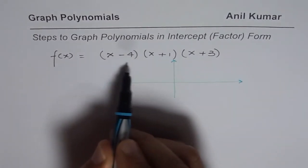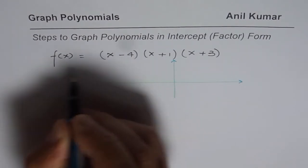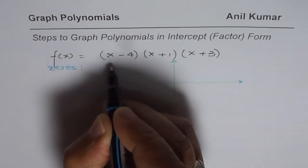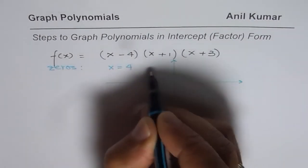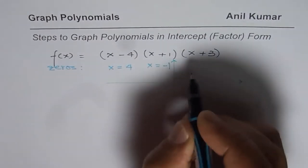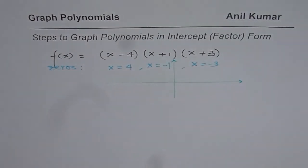First zero is when this factor is 0. x minus 4 is equal to 0 at x equals to 4. So let me write down zeros here. So we have zeros, the first one will be at x equals to 4. The next one will be at x equals to minus 1 since minus 1 will make this factor 0. And the third one is at x equals to minus 3.